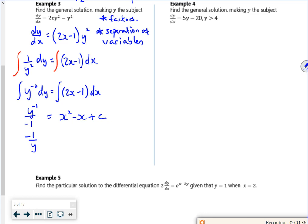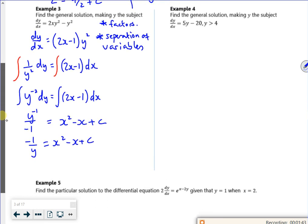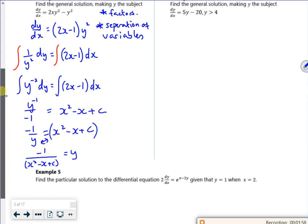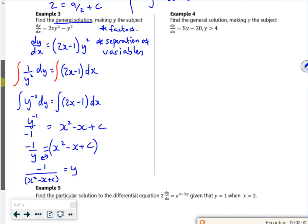Right, so x squared minus x plus c. So it wants a general solution making y the subject. If I imagine a set of brackets around there, I can just cross multiply. So minus 1 over x squared minus x plus c is equal to y. And then I've got a general solution, because it's got c's in it, and it's got y equals. So that's fine now.